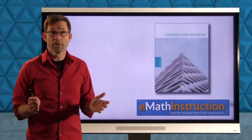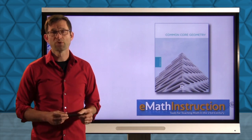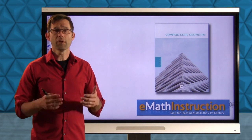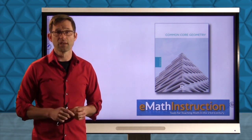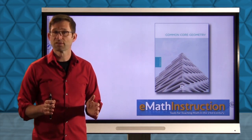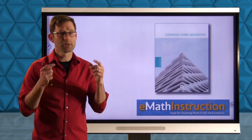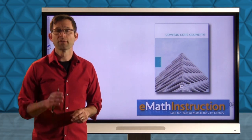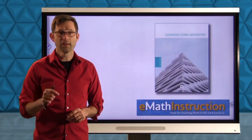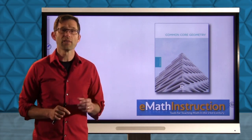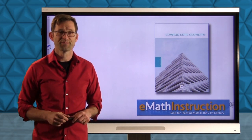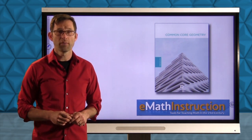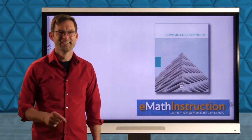This lesson presented a fairly simple theorem: if two secants intersect outside of a circle, the product of the exterior portion of each secant times its entire length remains constant. When it comes to a secant and a tangent, since the entire tangent lies outside the circle, the tangent length squared equals the external segment times the entire secant segment. You'll get a lot of work on these on the homework. Thank you for joining me for another Common Core Geometry lesson by EMath Instruction. My name is Kirk Weiler, and until next time, keep thinking and keep solving problems.